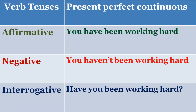Next is present perfect continuous. Affirmative: 'You have been working hard.' Negative: 'You haven't been working hard.' Interrogative: 'Have you been working hard?' Continuous means you have been doing that work over a period. 'You have been doing that work.' 'You haven't been doing that work.' 'Have you been doing that work?' or 'Have you been working hard?' — that's present perfect continuous.